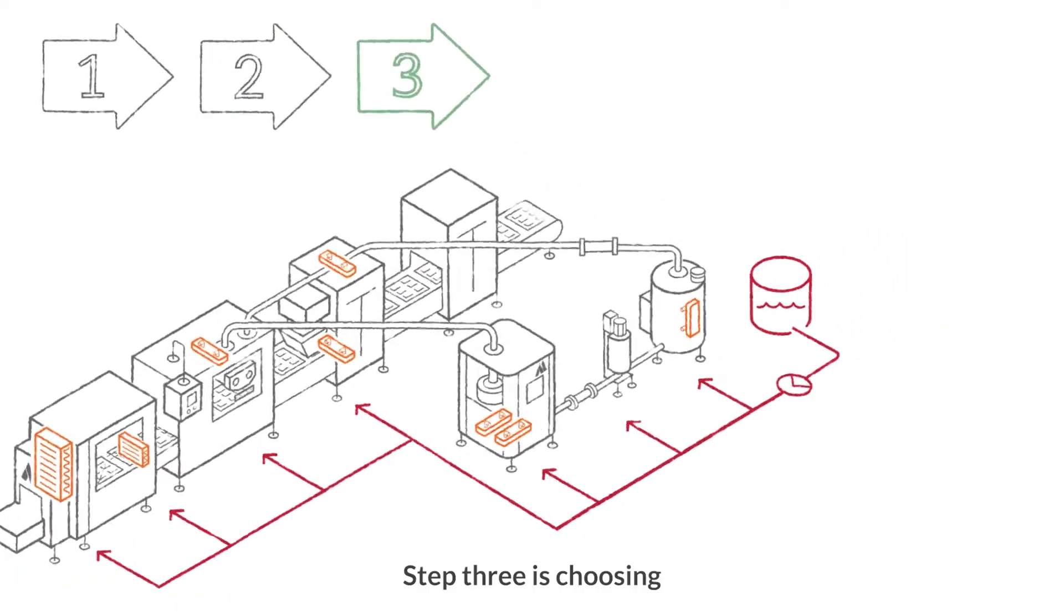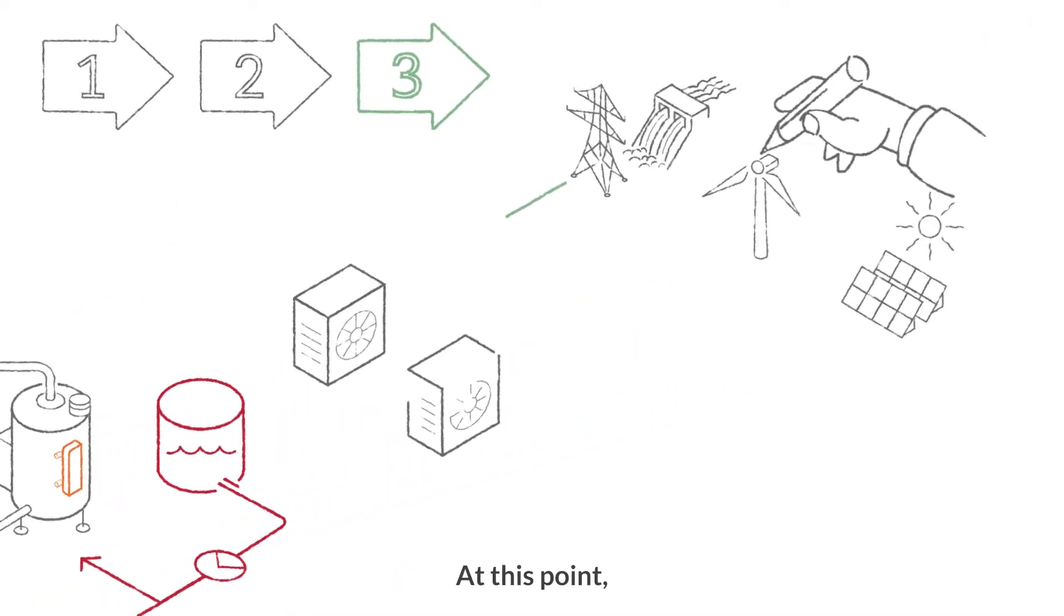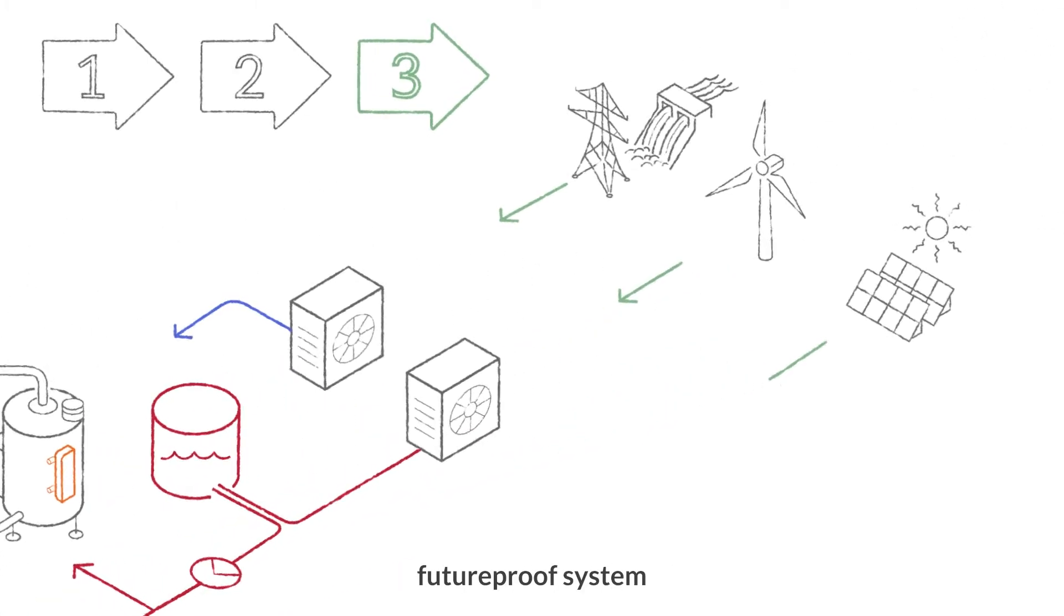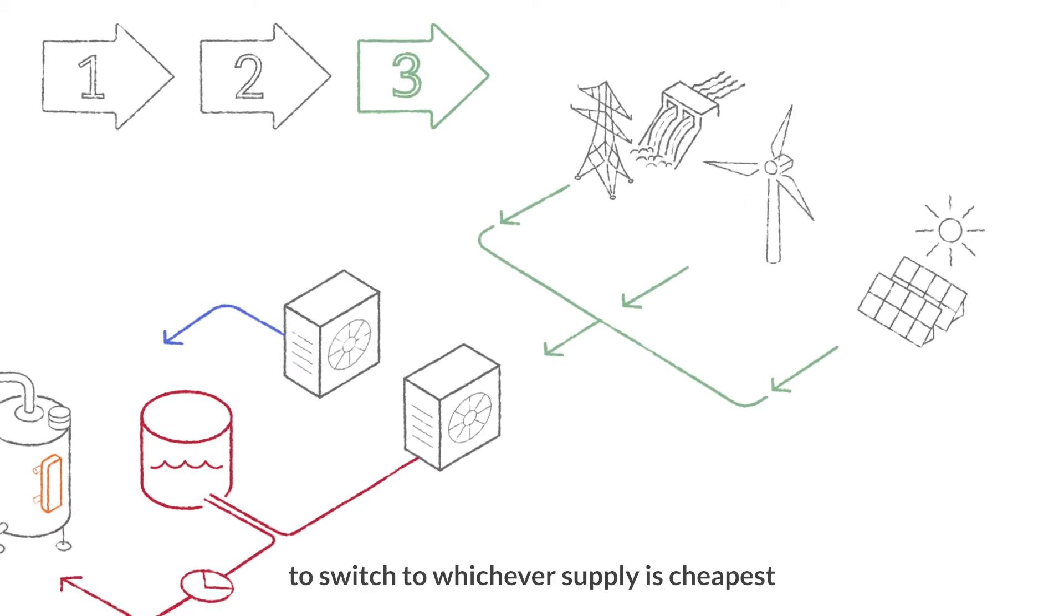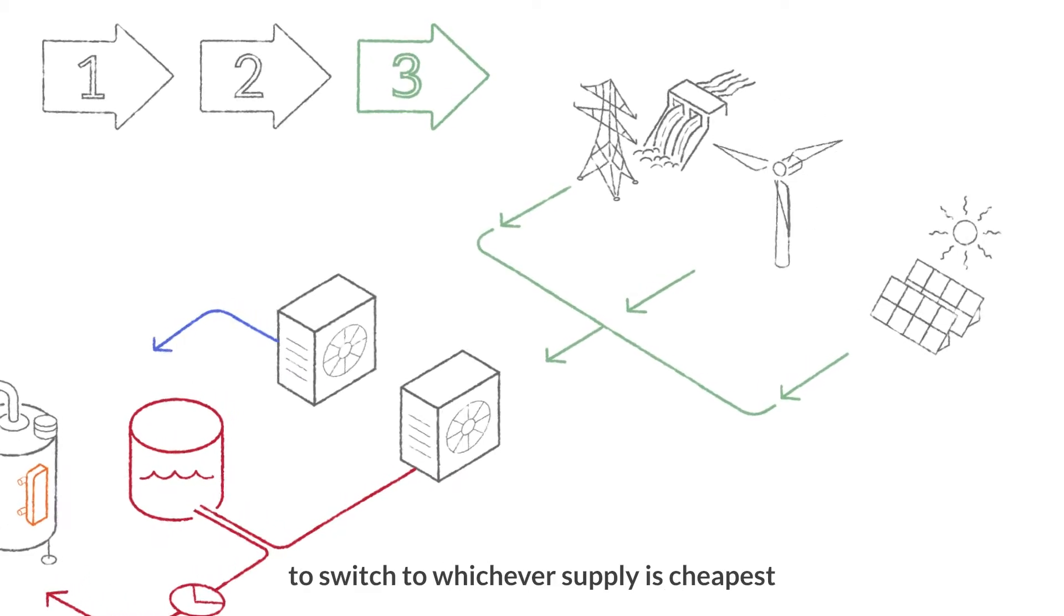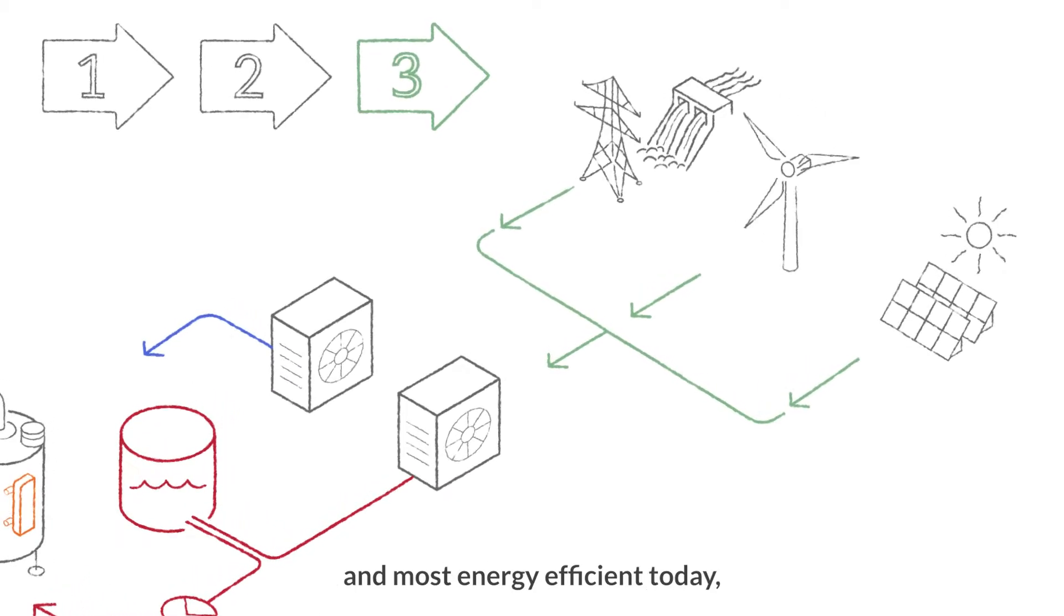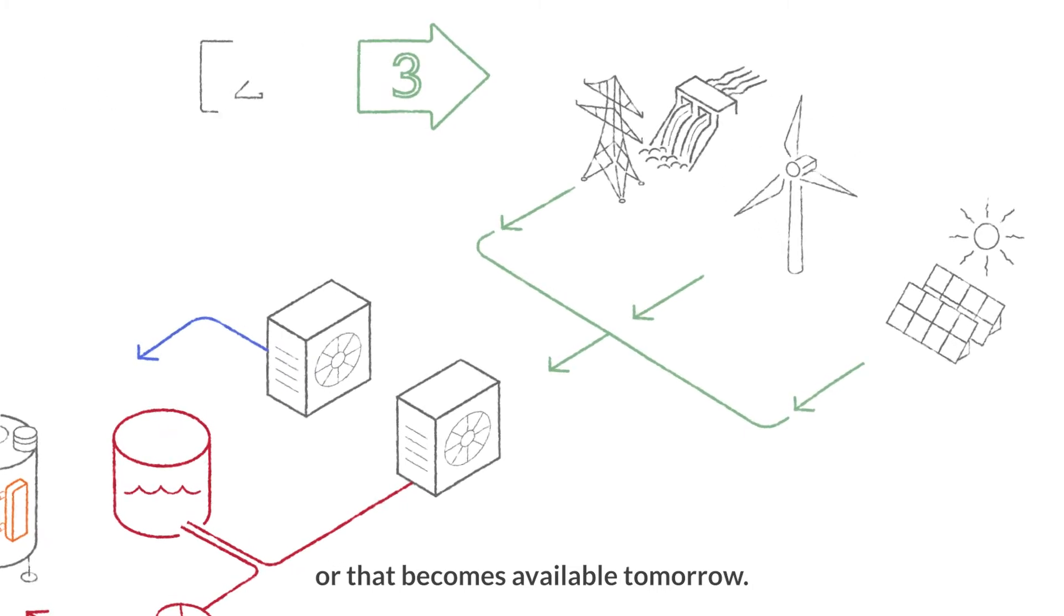Step three is choosing the right energy source. At this point, you will have an efficient futureproof system with the flexibility to switch to whichever supply is cheapest and most energy efficient today, or that becomes available tomorrow.